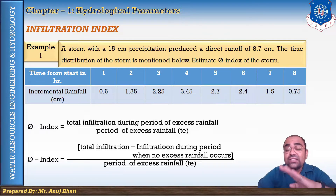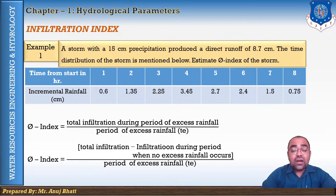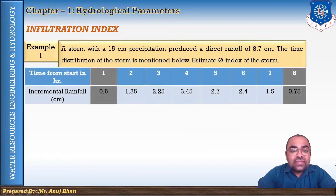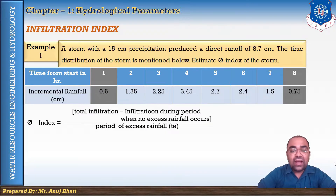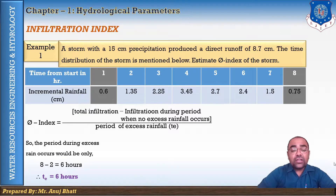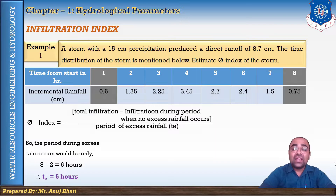The excess rainfall limit is the w index value of 0.7875 cm/hr. Any increment below that value is considered a period of no excess rainfall. From the table, the first hour rainfall (0.6 cm) and the last hour rainfall (0.75 cm) are both below 0.7875 cm, so these two values must be neglected in the phi index calculation. The two corresponding hours are deducted from the total.